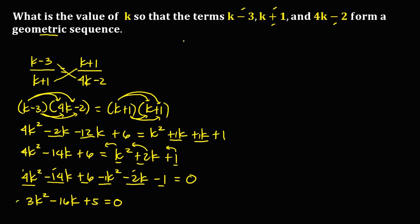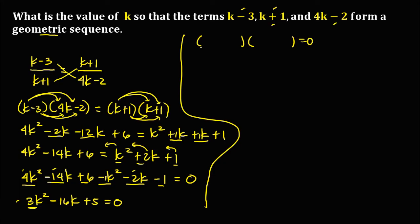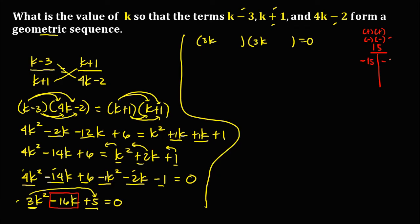Since this is a quadratic equation, we solve it by factoring. We write 3k on both sides of the factors. For the constant, we multiply 3 times positive 5 to get positive 15. We list all factors of positive 15. Since 15 is positive and the middle term is negative, we use all negative factors: negative 15 times negative 1, or negative 5 times negative 3.